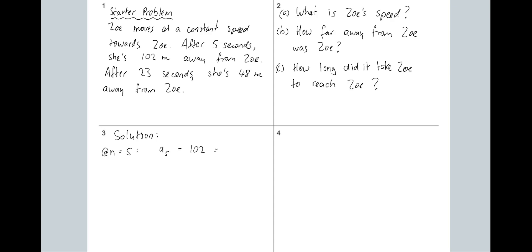There's also something else we know. For an arithmetic sequence, the fifth term is A1 plus n minus 1, so that would make this A1 plus 4 multiplied by D. We don't know what A1 is or what D is yet, but we can work it out.